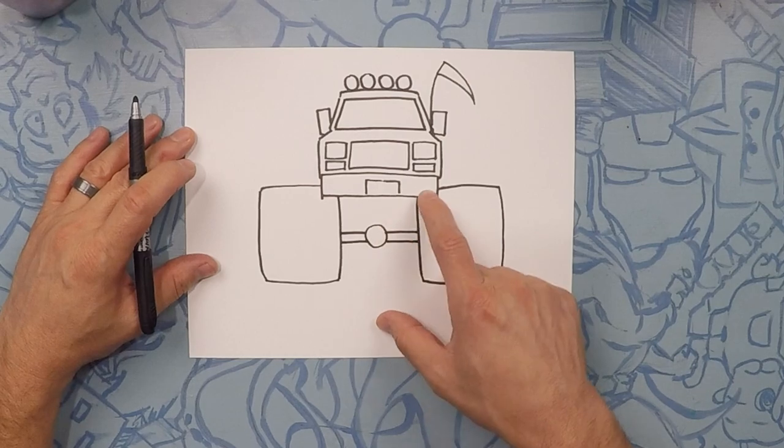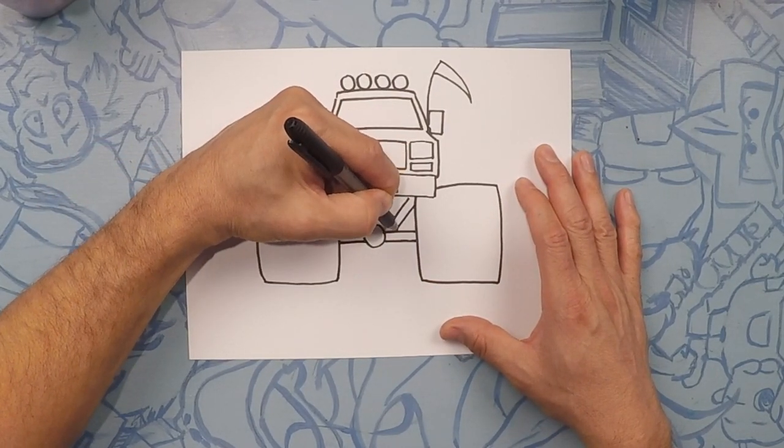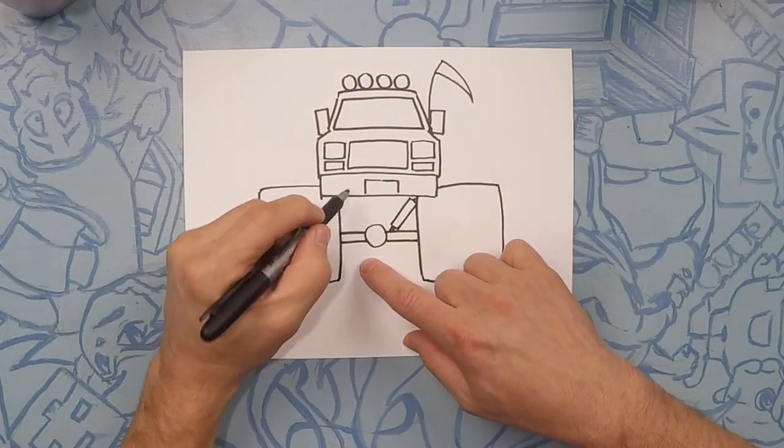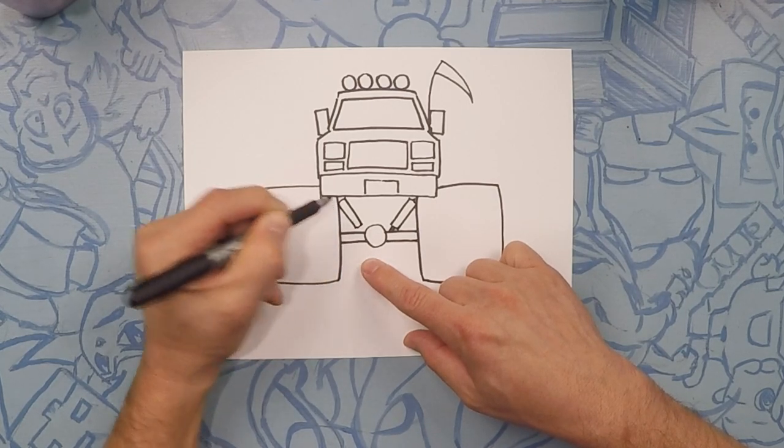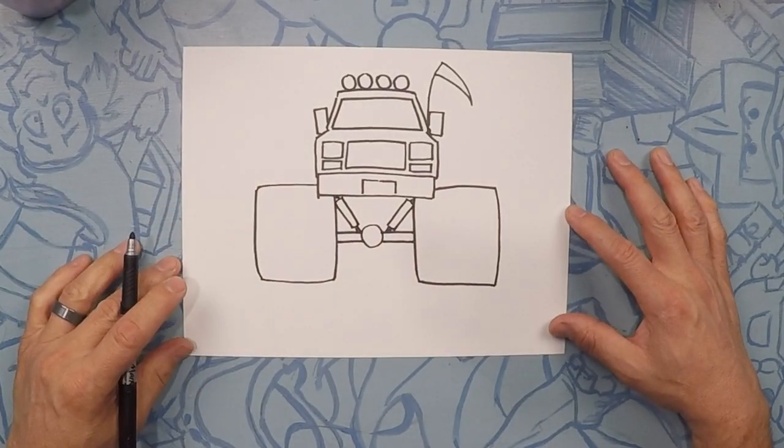All right. From there we're gonna do other little things here. Little squares. So this truck kind of has a lift kit on it. You can see all the things underneath. So another little square. Another little long square. And just connect that. Awesome.